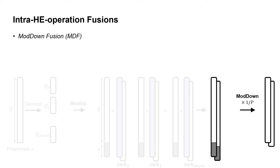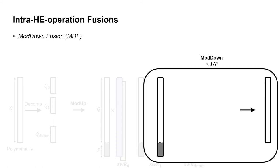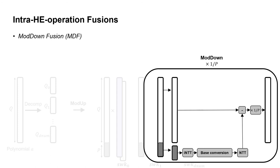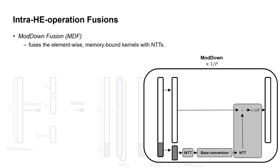The last one is moddown fusion. In moddown, we first split the residue set of the input polynomial into two sets: the Q part and the P part. For the P part, we apply i-NTT, base conversion, NTT, and subtract that from the Q part, then scale the output by 1/P. In this moddown fusion, we fuse the three last kernels — the subtraction kernel and the scaling one with its preceding NTT kernel — because subtraction and scaling are both element-wise, memory-bound operations that benefit from kernel fusion.